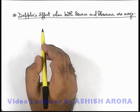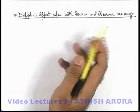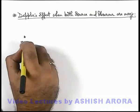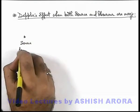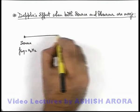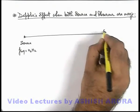Let's analyze the case when both source and observer are moving and Doppler's effect is accounted. Here you can see if there is a source having a frequency n₀ hertz, and in front of source there is an observer.